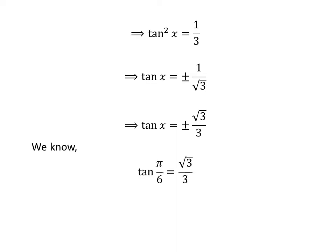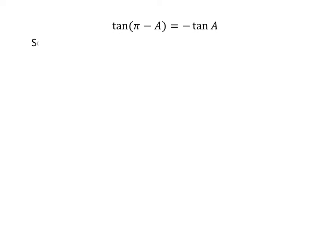We know the value of tangent of pi upon 6 is square root of 3 upon 3. We also know the trigonometry identity tangent of pi minus a is equal to minus tangent of a. Application of the above identity implies that tangent of pi minus pi upon 6 is equal to minus tangent of pi upon 6.